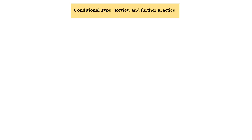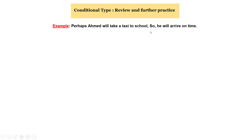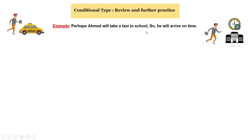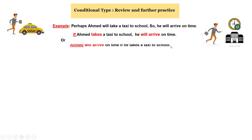Before we go to your exercises, it's much better to have a brief review of what we did last time about conditional type 1 — its form and use. Let's have a look at this example. Perhaps Ahmed will take a taxi to school, so he will arrive on time. In conditional type 1: 'If Ahmed takes a taxi to school, he will arrive on time.' Or: 'Ahmed will arrive on time if he takes a taxi to school.' So here we have an example of conditional type 1.